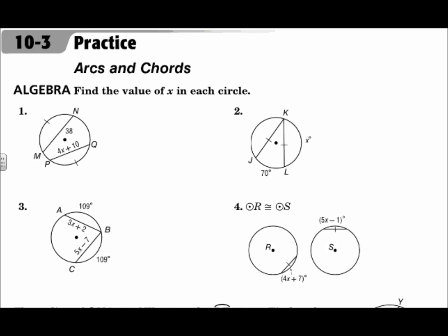One of the main rules to remember here is that in a circle, when two chords are congruent, then the arcs that they intercept are also congruent, and vice versa. So if I have a circle and I draw two chords, if the chords are congruent, then the arcs that they intercept are also congruent. So we'll be making chord measures equal each other and arc measures equal each other.